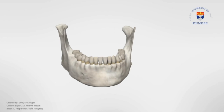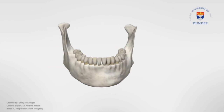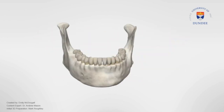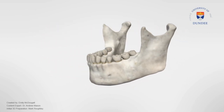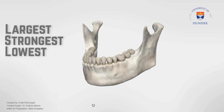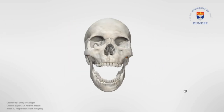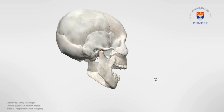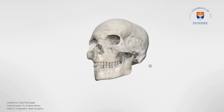Well done if you made it this far — I hope these 20 points we covered were helpful. A surprising fact about the mandible is that it's the largest, strongest and lowest bone in the human facial skeleton, and the only movable bone of the skull except the ossicles of the middle ear.